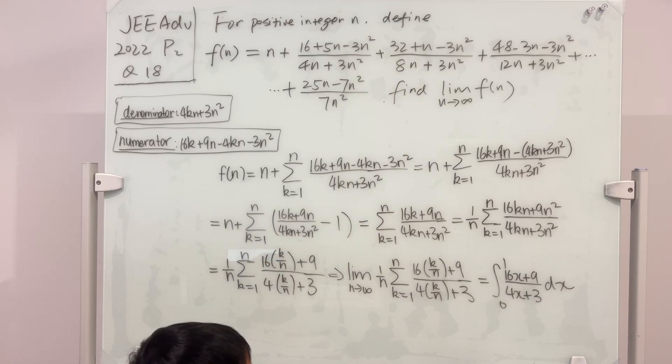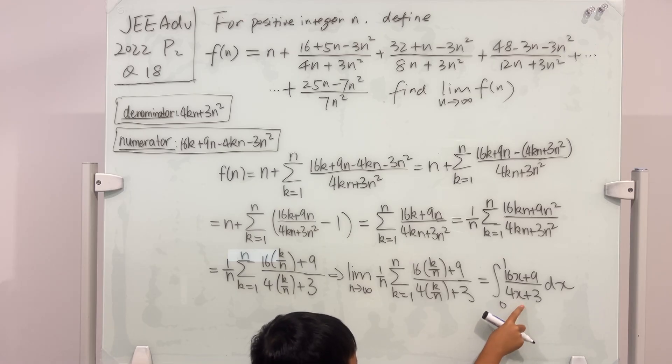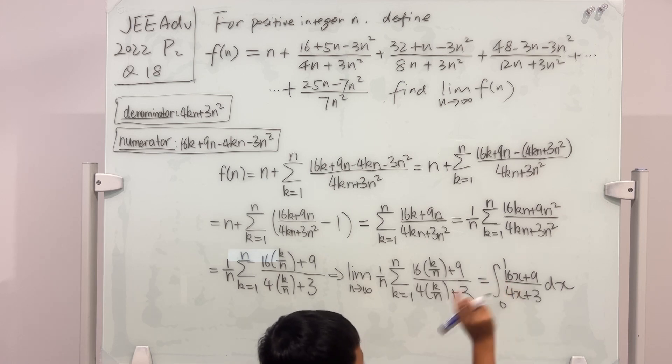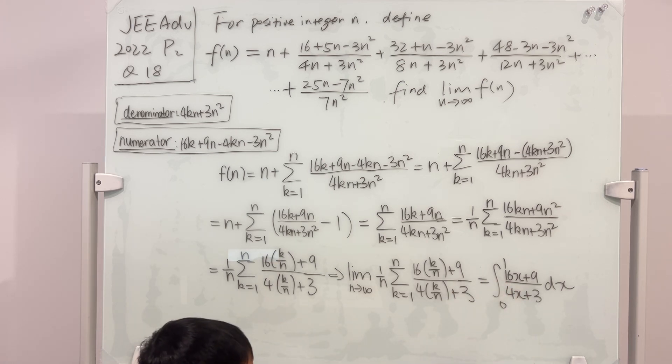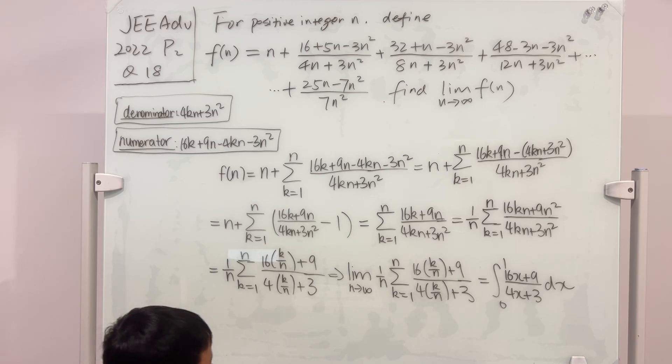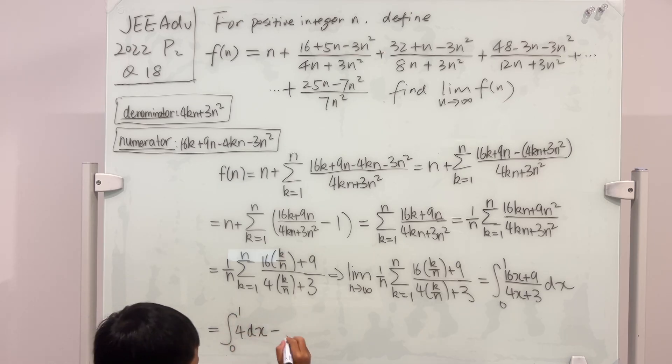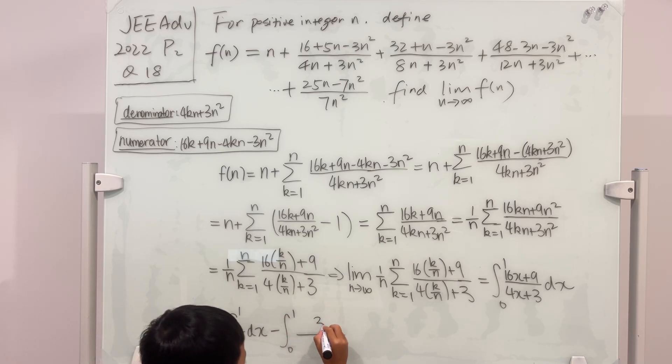And if we notice, if we multiply the denominator by 4, then it will become 16x + 12. But here we have a 9. That's easy. See, we can just make it 4, but then we have to make sure we subtract the integral from 0 to 1 of 3 over 4x + 3. So that being said, this is equal to the integral from 0 to 1 of 4 dx, and then we'll subtract it with the integral from 0 to 1 of 3 over 4x + 3.